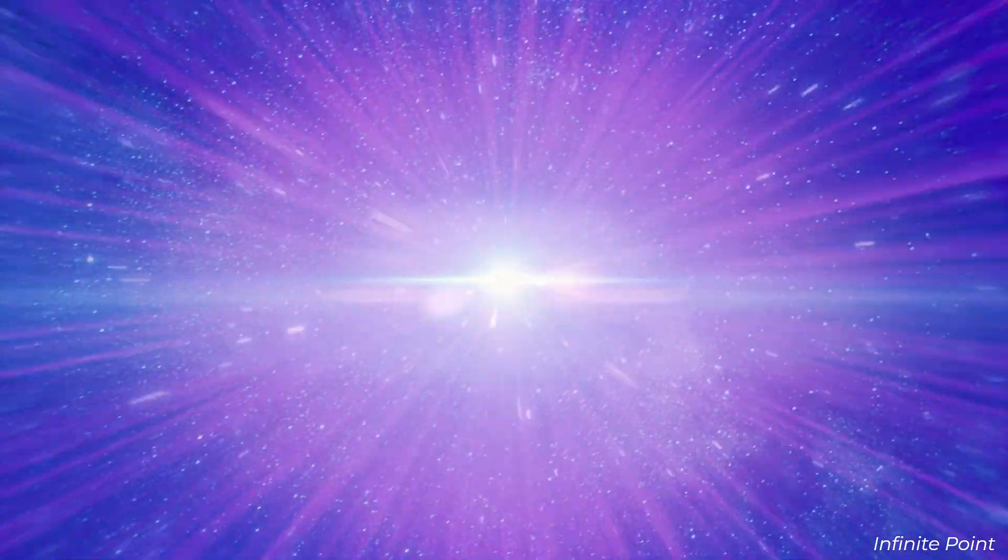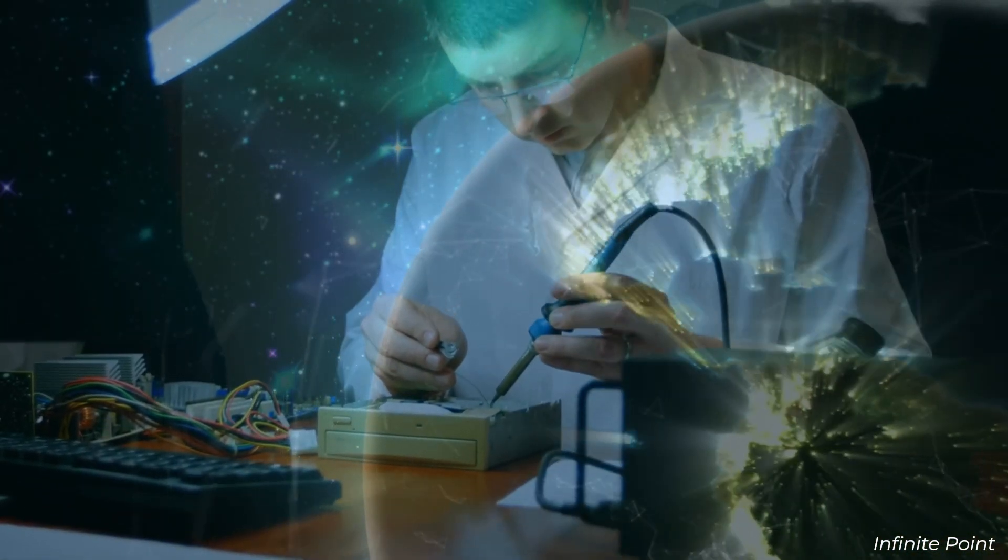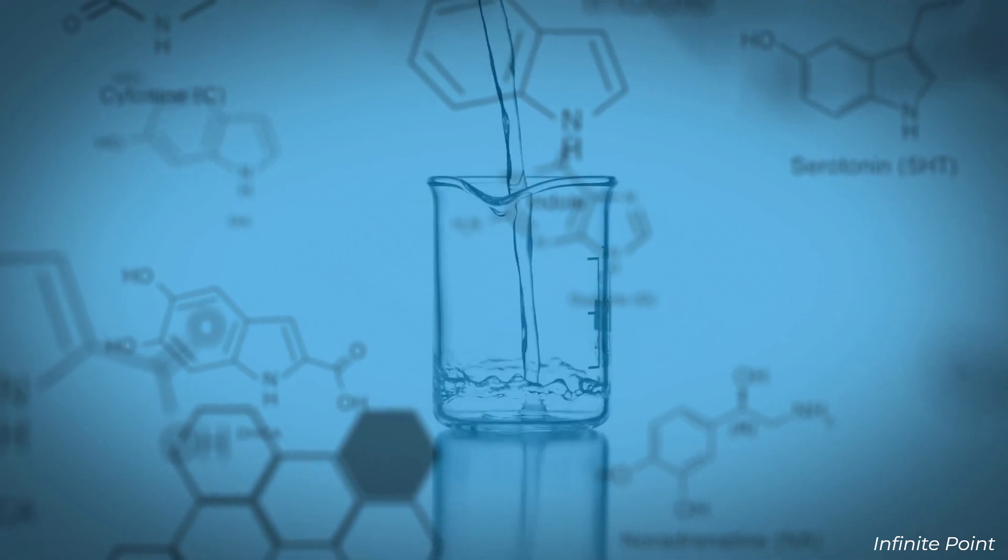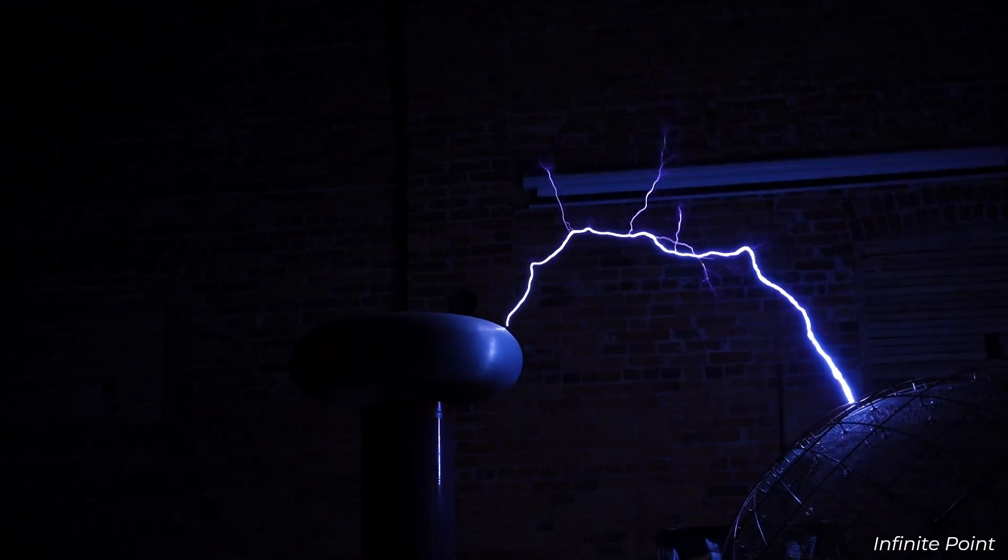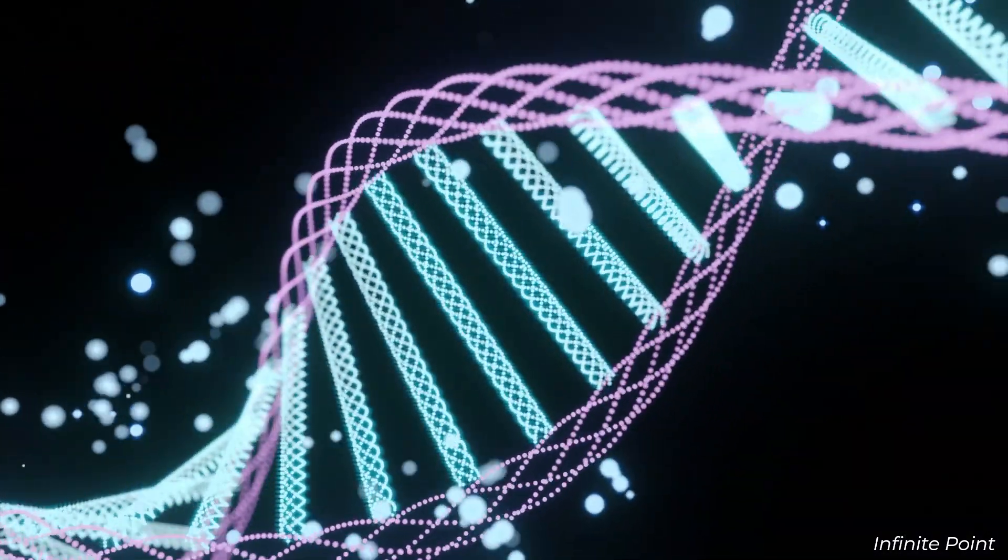In 1953, scientists Stanley Miller and Harold Urey conducted an experiment to simulate these conditions. By mixing water, methane, ammonia, and hydrogen and exposing them to electrical sparks, they successfully produced amino acids, the building blocks of proteins.